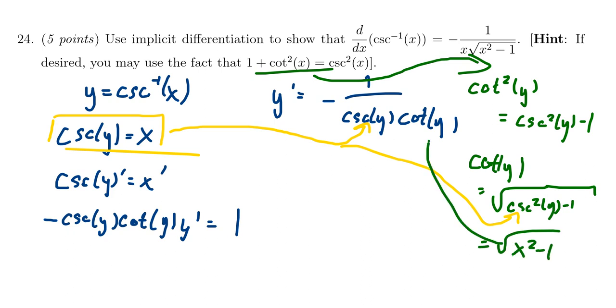And so we make that substitution in for there. We then get the derivative we were looking for. We get that y prime is equal to negative 1 over x times the square root of x squared minus 1.